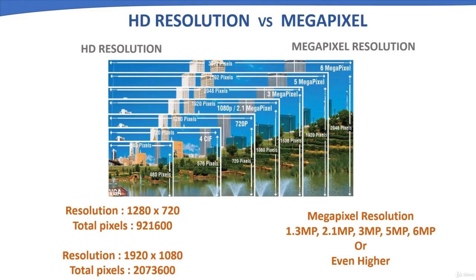As shown in the image, 640 pixels are arranged horizontally and 480 pixels are arranged vertically, giving a total resolution of 307,200 pixels — this is VGA quality. One could consider HD as a subset of megapixel. Any camera with a resolution of more than one million pixels is defined as a megapixel camera. Megapixel cameras come in a wide range starting from 1.3 megapixel, 2 megapixel, 3 megapixel, or even higher.